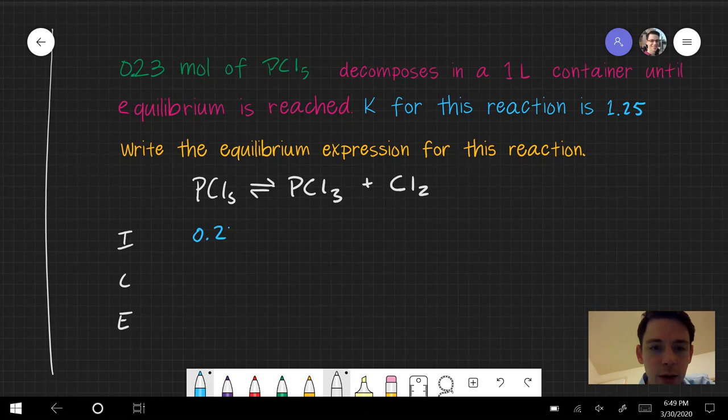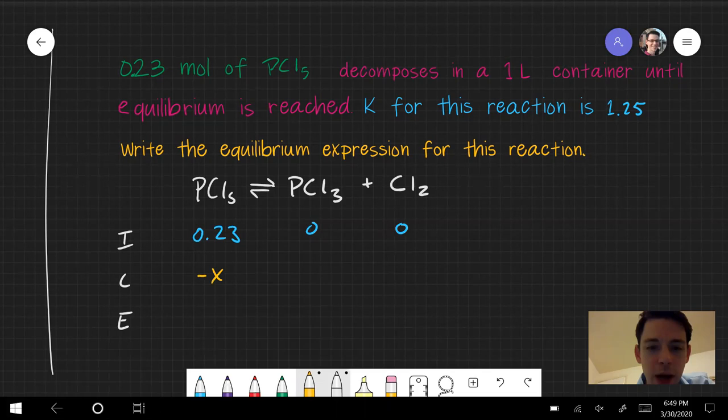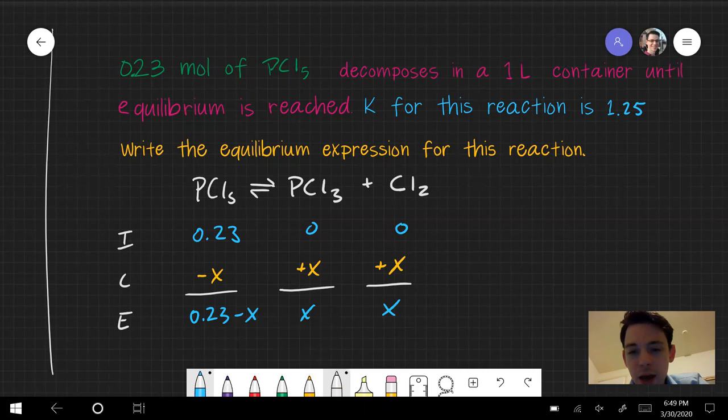All right, I'm going to jump in. We've got 0.23 moles of PCl5, 0 moles of the other two substances because they're products. This is a one-to-one reaction, one-to-one-to-one. So it's x, x, x. Add those up, and I get 0.23 minus x, x, and x.